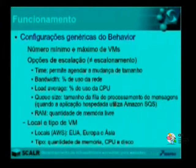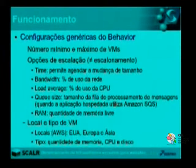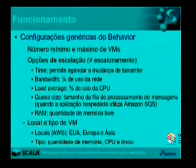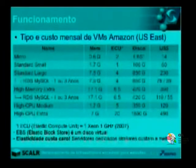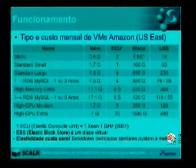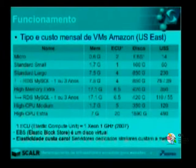Outra configuração necessária para cada behavior de cada role é o local de hospedagem das VMs e o tipo de máquina virtual (memória, CPU, disco). Especificamente, a Amazon disponibiliza data centers nos Estados Unidos, na Europa e na Ásia. Para ilustrar os custos, foi feita uma pesquisa no site da Amazon com relação aos tipos de máquinas disponíveis para utilização ao configurar o Scalr com a infraestrutura AWS.